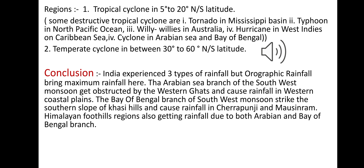In conclusion, India experiences all three types of rainfall, but orographic rainfall brings the maximum rainfall. The Arabian Sea branch of the southwest monsoon is obstructed by the Western Ghats and causes rainfall in the western coastal plain. The Bay of Bengal branch of the southwest monsoon strikes the southern slope of the Khasi Hills and causes rainfall in Cherrapunji and Mawsynram. The Himalayan foothill regions also receive rainfall due to both the Arabian Sea and Bay of Bengal branches.